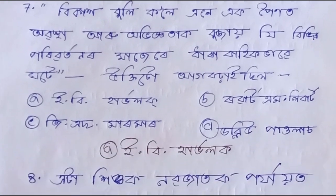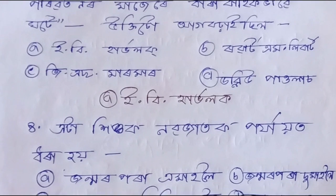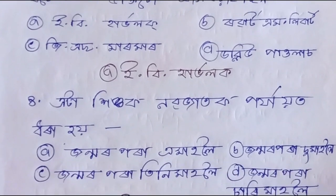Question number eight: Yetak hikuk nabajatak pojajad dhara hai. Option A: janmarpraya mahali. Option B: janmarpraya du mahali. Option C: janmarpraya tini mahali. Option D: janmarpraya tshari mahali. The correct answer is Option B: janmarpraya du mahali.